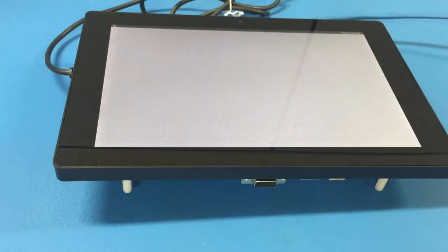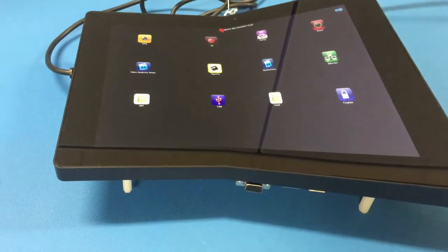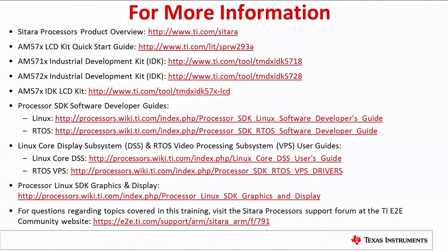Once the J51 shunt is installed, power up your board and the LCD should boot up properly. For more information about the AM5718 IDK and the LCD IDK kit, refer to the resources below. If this video has not resolved your LCD kit issues, please get in touch through the Sitara processor forum at the TI-E2E community website as shown below.